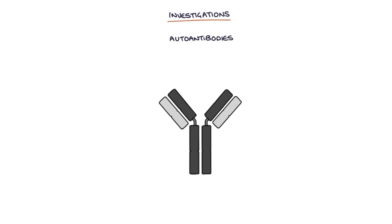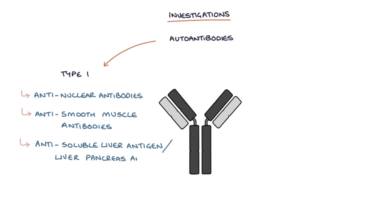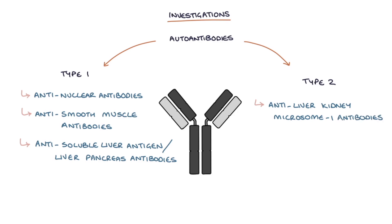Autoantibodies found in type 1 autoimmune hepatitis are anti-nuclear antibodies or ANA, anti-smooth muscle antibodies or anti-SMA, and anti-soluble liver antigen/liver pancreas antibodies. Autoantibodies in type 2 autoimmune hepatitis are anti-liver kidney microsome 1 antibodies or anti-LKM1, and anti-liver cytosol antigen type 1 antibodies or anti-LC1.